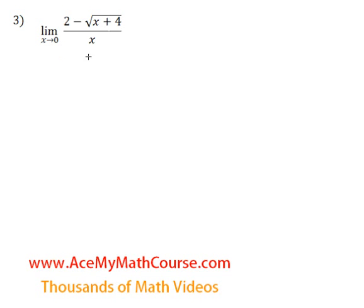So what is our other option? Well, how about we just multiply the top and the bottom of the fraction by the conjugate of the top. And the conjugate of 2 minus root x plus 4 is 2 plus root x plus 4. And of course, we need that down below as well.